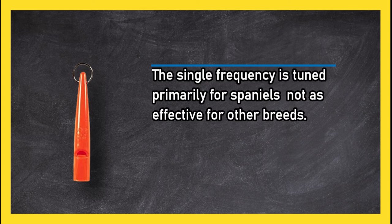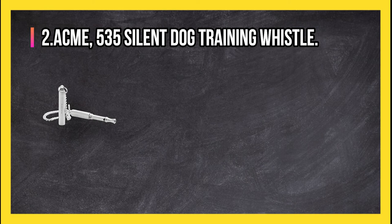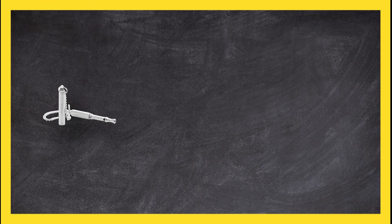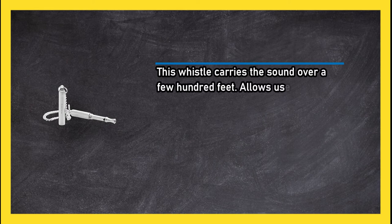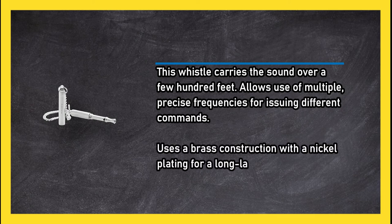At number two, ACME 535 silent dog training whistle. This whistle carries the sound over a few hundred feet, allows use of multiple precise frequencies for issuing different commands, uses a brass construction with a nickel plating for a long-lasting design.